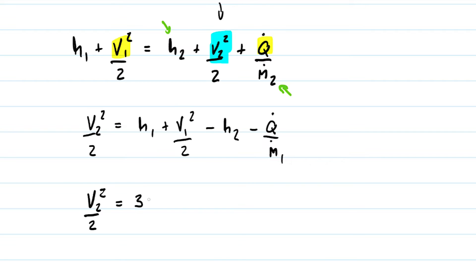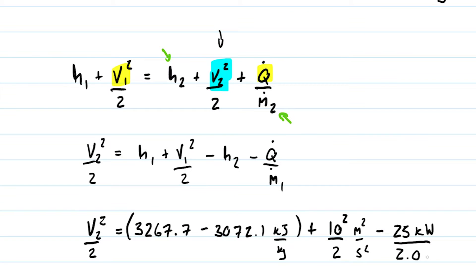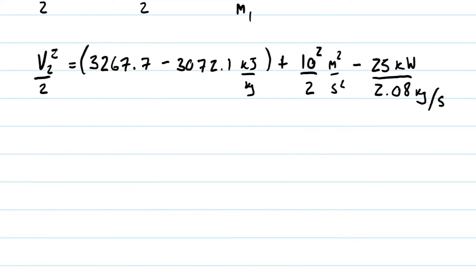Plugging in values: h1 is 3267.7 kJ/kg, h2 is 3072.1 kJ/kg, v1 is 10 m/s so v1²/2 is 100/2 m²/s², and the heat loss is 25 kilowatts divided by 2.08 kg/s. The units are a hot mess and it's critical they're consistent.